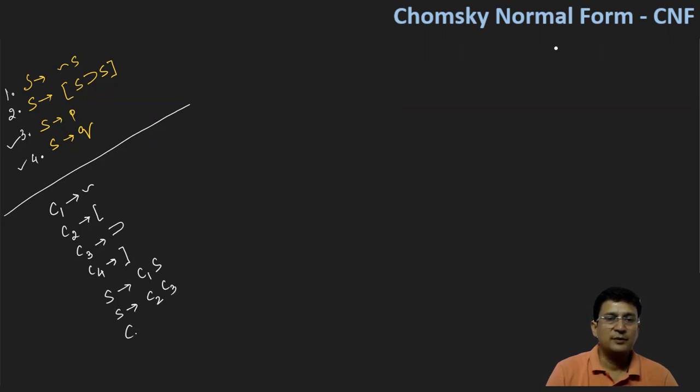Not C3 because C3's symbol is already there. So we will mark it as C5. And C5 will contain all these things. So let's say S produces C2 C5.